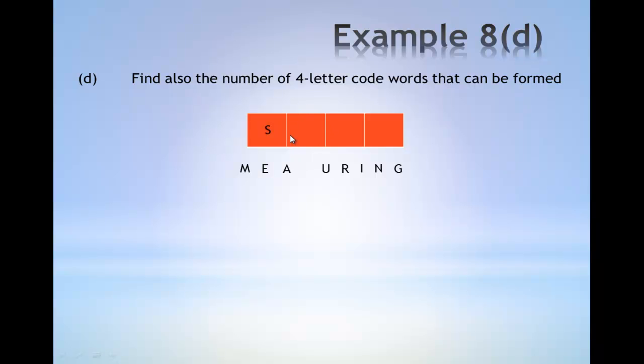The letter going into the second slot can be coming from any of the remaining eight letters. This is similar for the remaining third and fourth slot, which is given by seven possible letters and six possible letters. This gives a total of 3024 possible four letter code words.